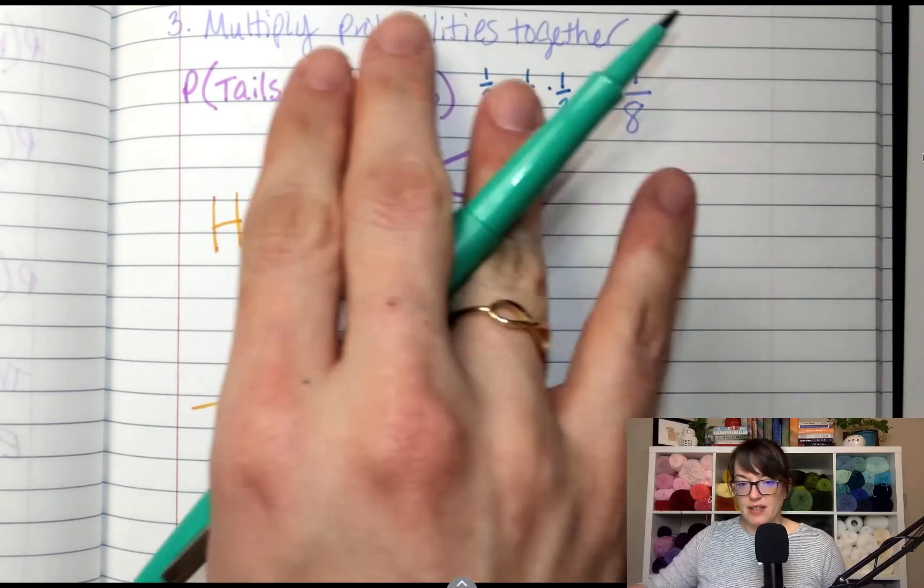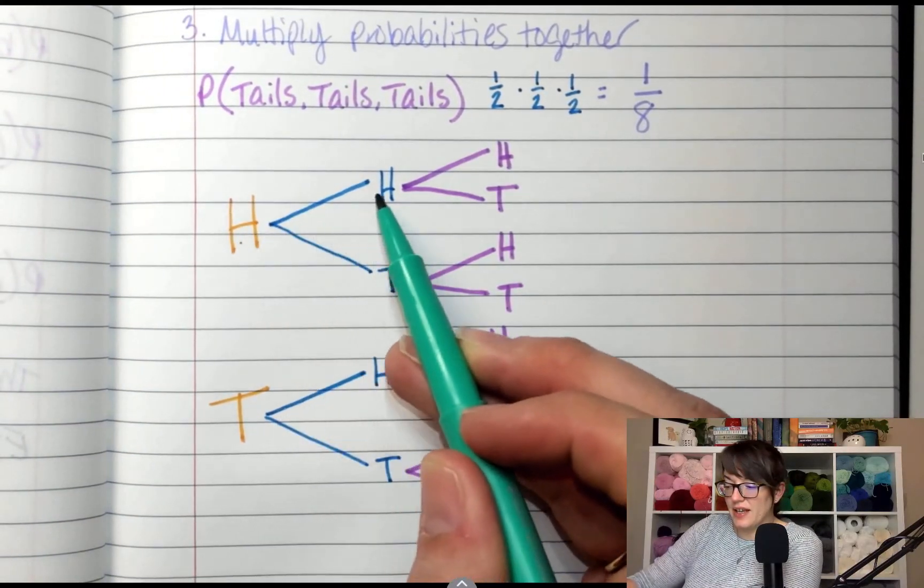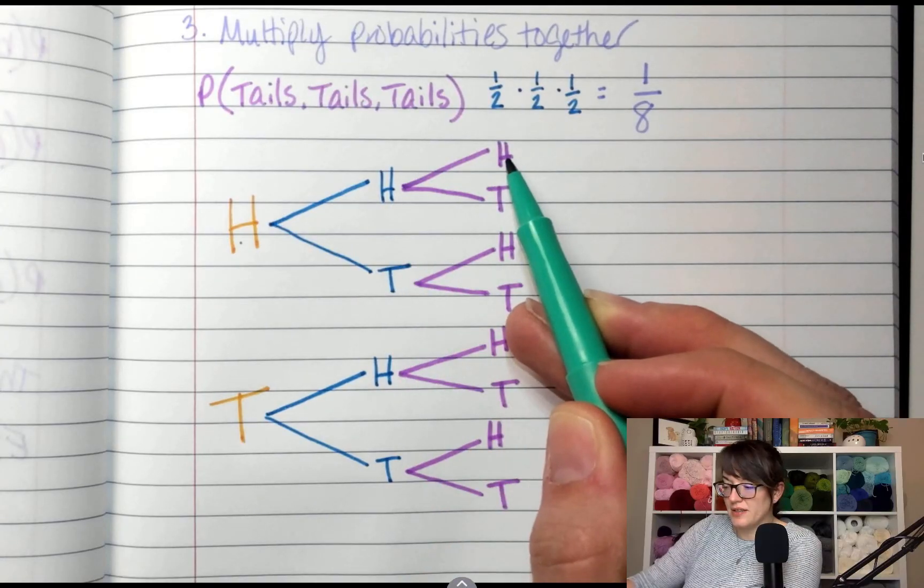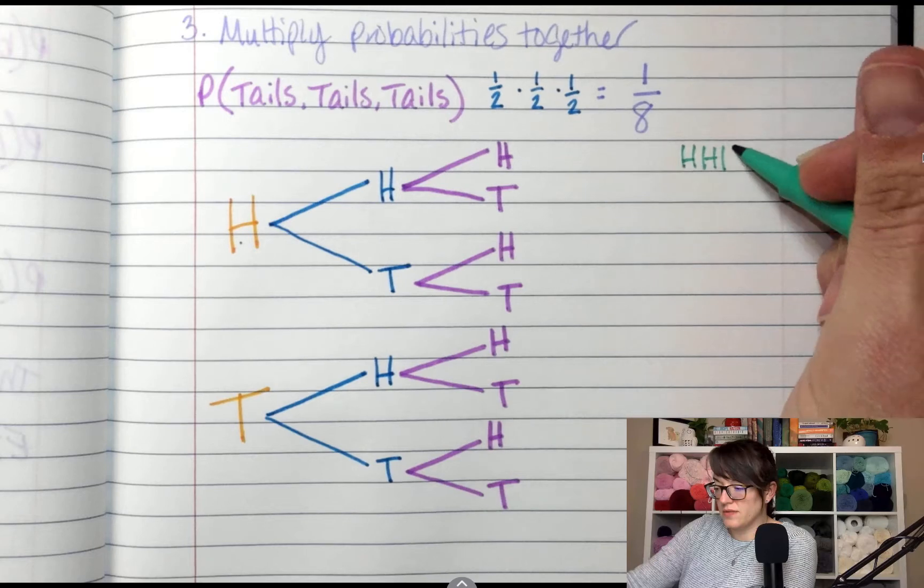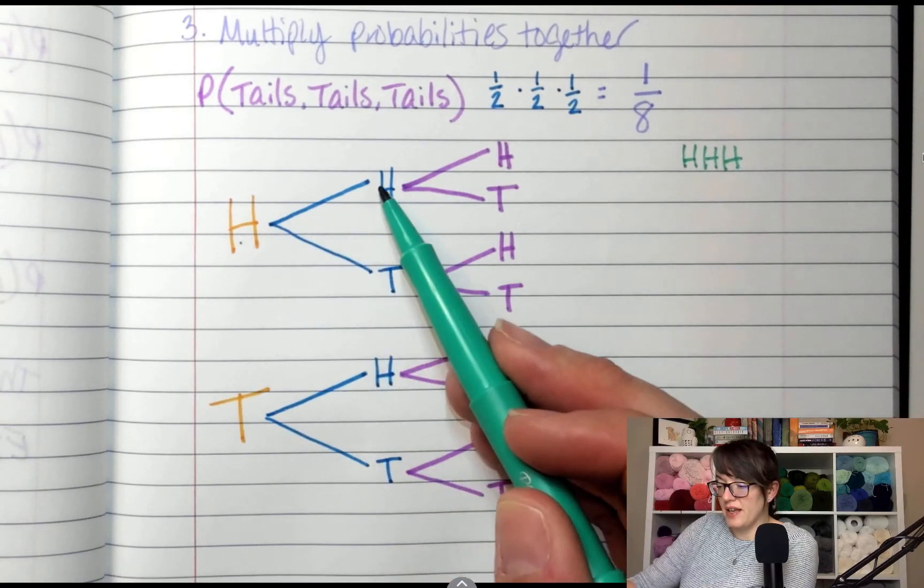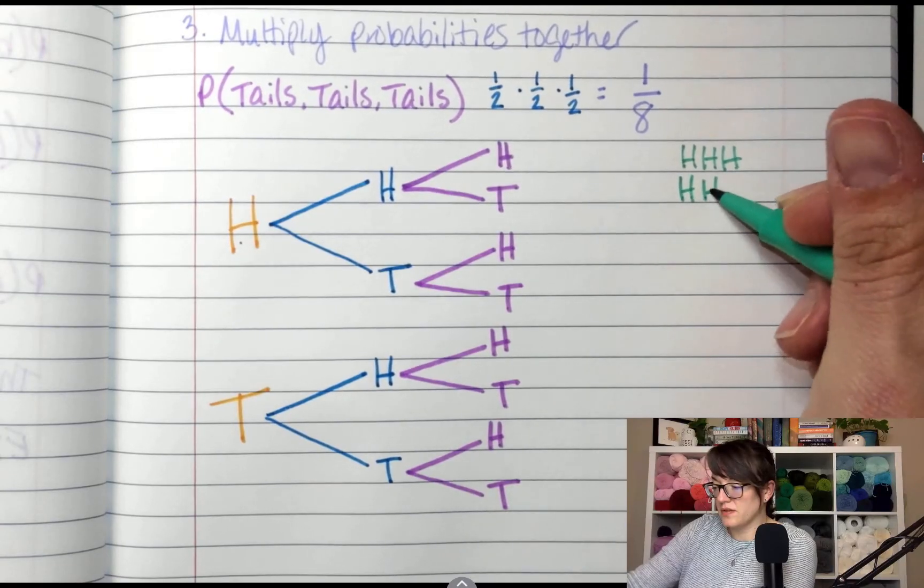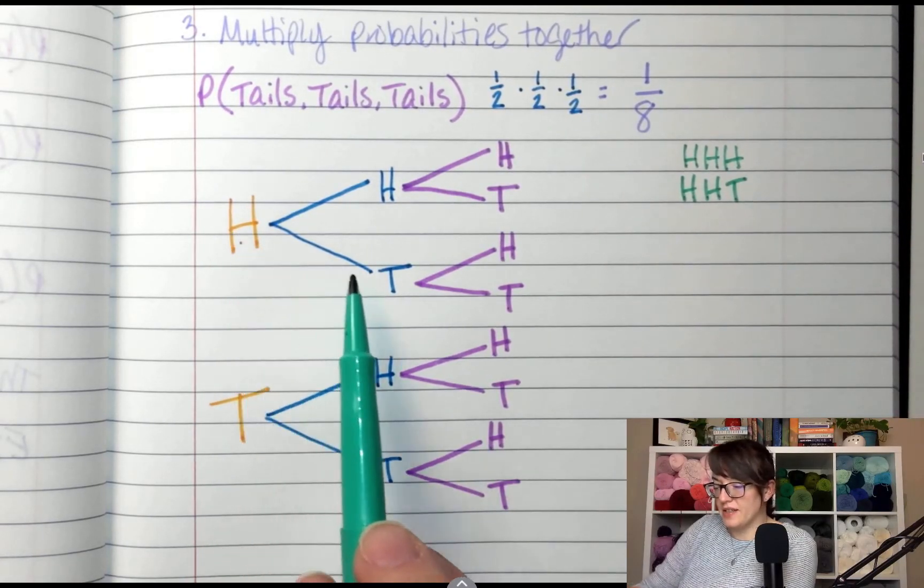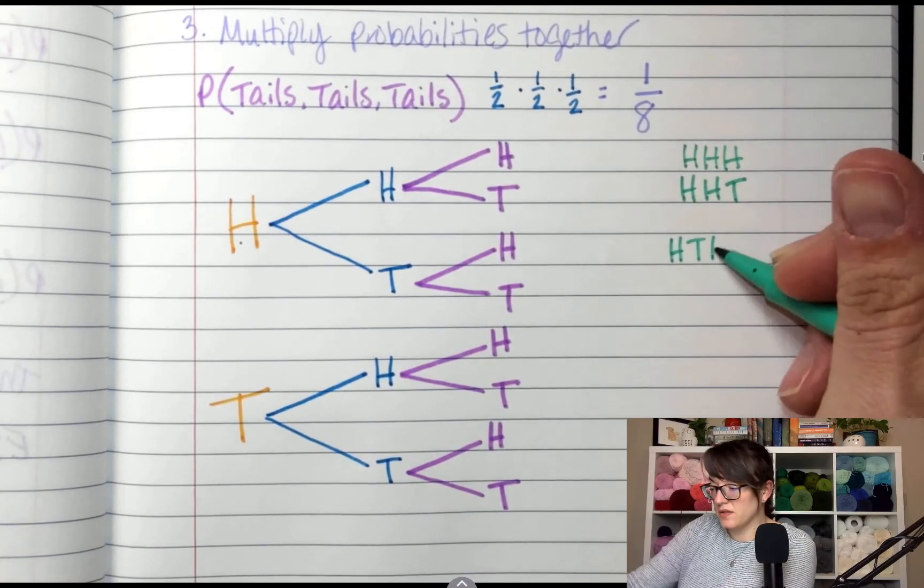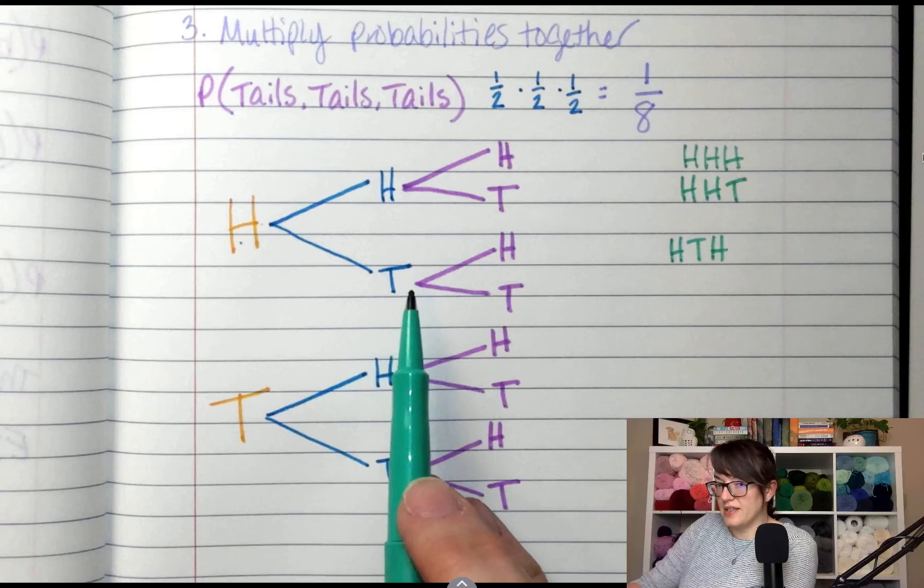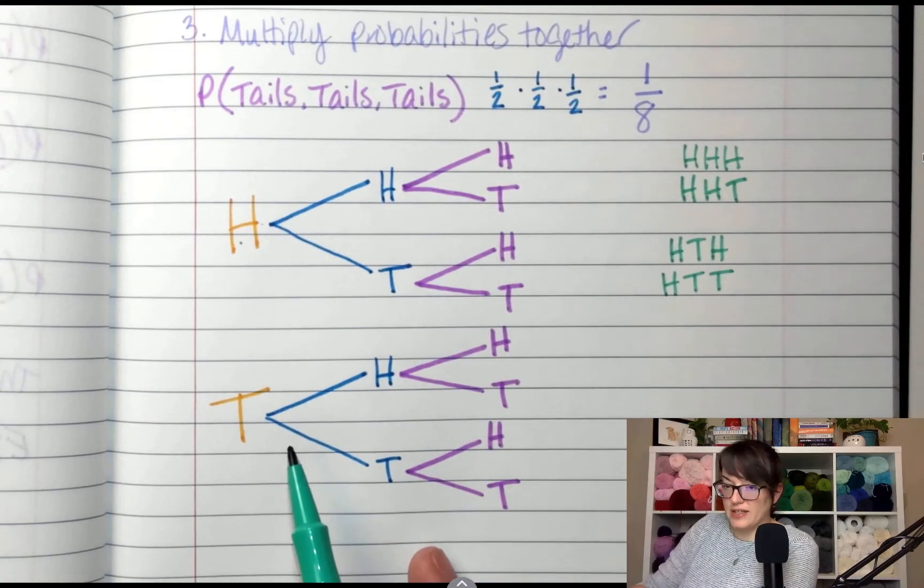Again, this is a tree diagram. So if I have heads, heads, heads, that's one. I could also do heads, heads, tails. We're making a list of all the possible combinations. Heads, tails, heads. Or heads, tails, tails. And now we get to this part. Tails, heads, heads. Or heads, tails, tails.